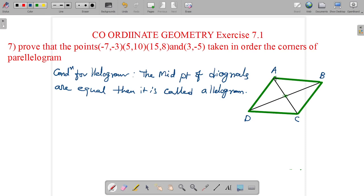Here the diagonal is B, this is diagonal 1, this is diagonal 2. Find the midpoint of diagonal 1. Let us assume that this is A, this is B, this is C, and this is D.